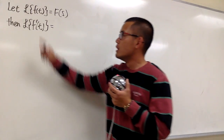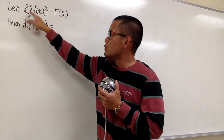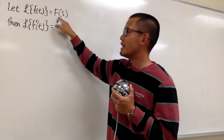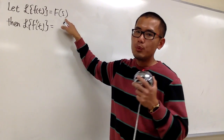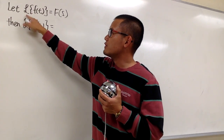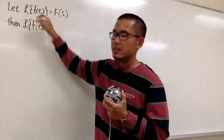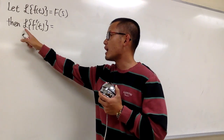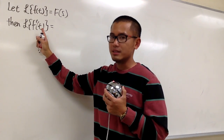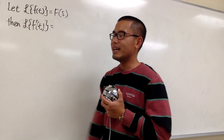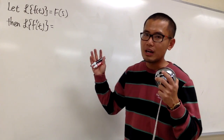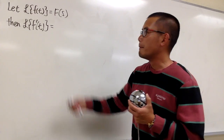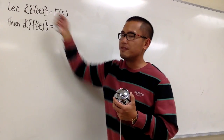Suppose that we know the Laplace transform of the original function f of t is equal to F of s, and we're assuming that the Laplace transform of f of t does exist. Let's try to find out what the Laplace transform of its derivative is. We don't have a specific function here, so we're going to come up with a formula based on this fact.